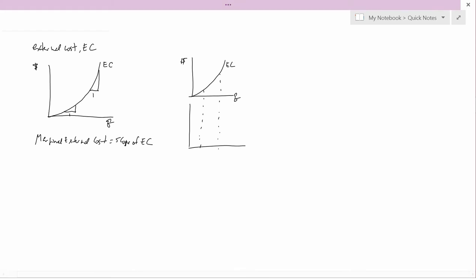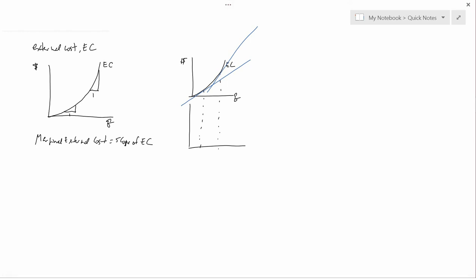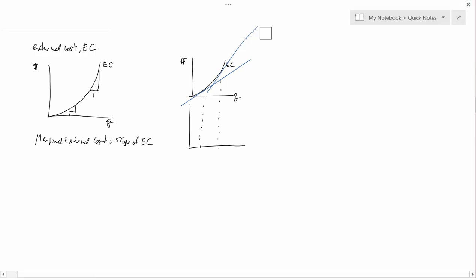Let's just take two values of Q. We want to draw tangent lines. Look at my straight edge. And so that would be the tangent line at the first level of Q. And that would be the tangent line at the second level of Q. I think I need to erase part of that.